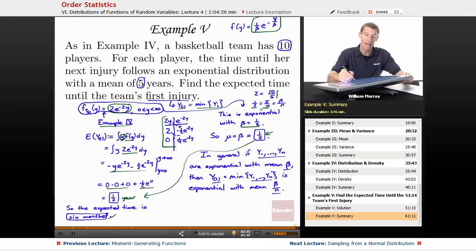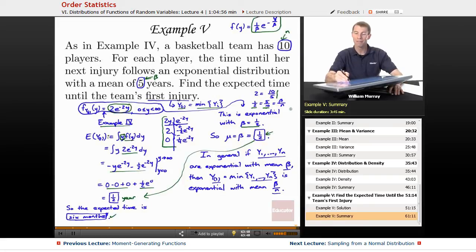In turn, that comes from 5 over 10. The 5 and 10 come from the original problem. The 5 was the beta and the 10 was the n. The one half came from beta over n. So we have an exponential distribution with beta equals the new beta is the old beta divided by the old n. That's a general principle there. If you have n exponential variables with the mean of beta, then their minimum will be exponential again with mean beta over n.